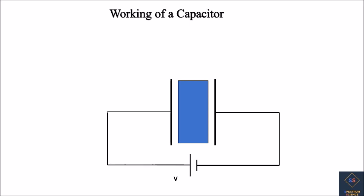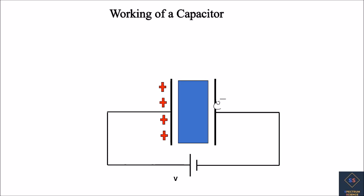When a voltage is applied across the capacitor, the plate connected to the positive terminal of the battery experiences a positive charge — electrons from that plate move to the battery, and with time there is a deficit of electrons on this plate and it develops a positive charge. Similarly, electrons from the negative terminal of the battery move to the right plate of the capacitor, and with accumulation of electrons on this plate it develops a negative charge.